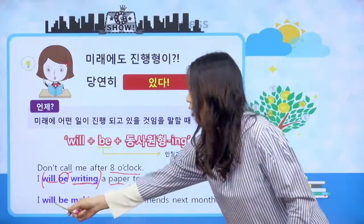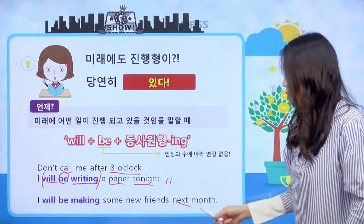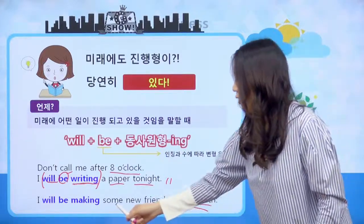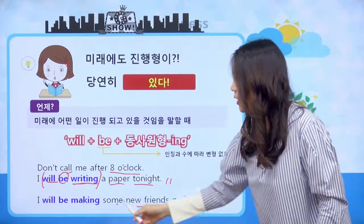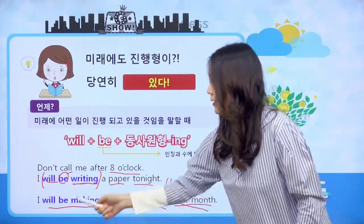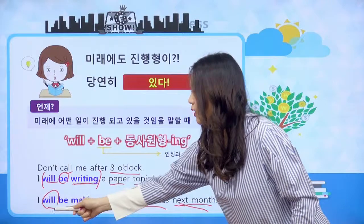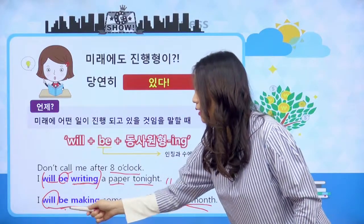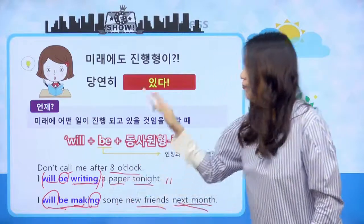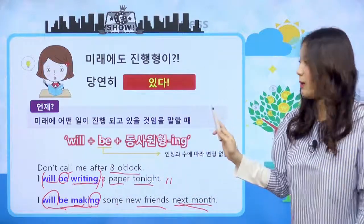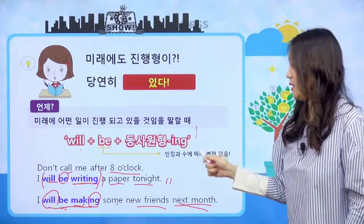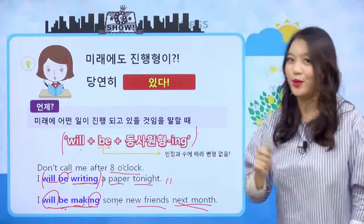'I'll be making some new friends next month.' 나는 다음 달에 몇몇의 새로운 친구들을 사귀고 있을 거야라는 문장이 되겠는데요. 마찬가지로 will be, be 동사 안 변했어요. 동사에 ing가 왔네요. 그래서 이렇게 미래에도 진행형이 있고, 어떻게 만든다? will be 동사에 ing, 이것만 잘 기억하면 되겠습니다.